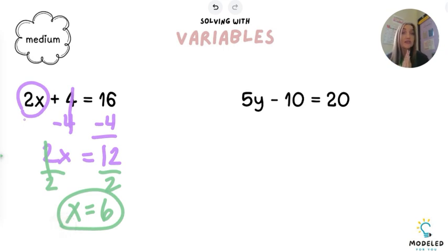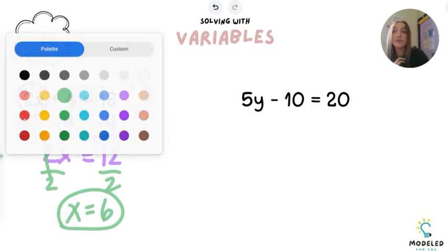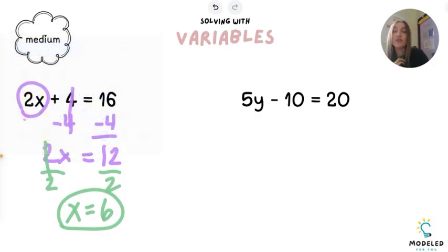Now I'm not finished yet, because I always have to check my answer. Let's see if we were right. I have 2, I'm going to plug in what I got for x, then add 4, and it should equal 16.